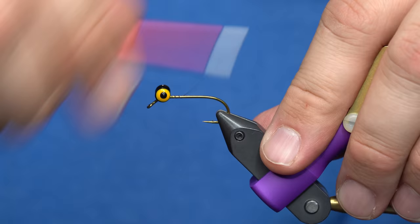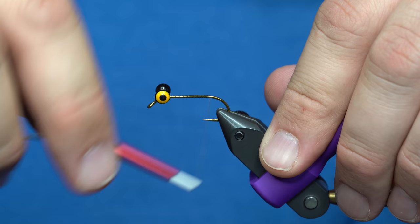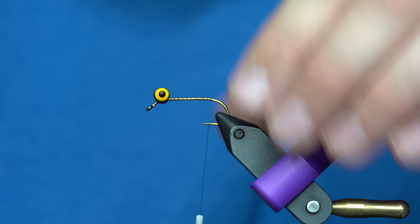So you can add some lead wraps on this if you want it heavier. There's a lot you can do to make this fly heavier, but I just like to adjust the size of eyes.